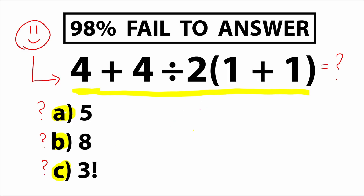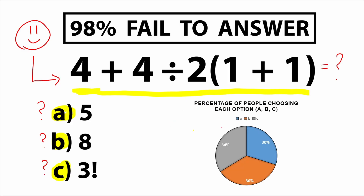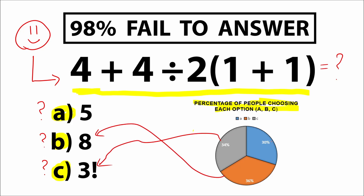Before the video I made a quick poll and here are the results. We can see the percentage of people choosing each option: 34% of people chose option C as the correct answer, 36% chose option B, and 30% chose option A.